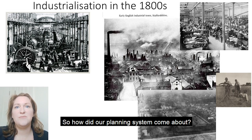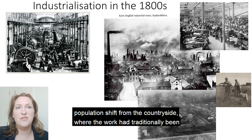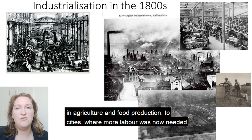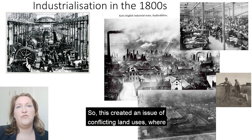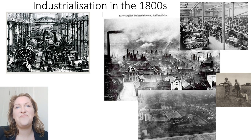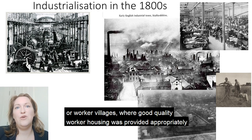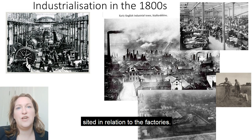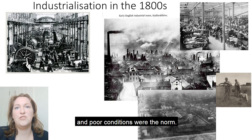So how did our planning system come about? In the 1800s with no planning system in place, industrialisation brought a huge population shift from the countryside, where the work had traditionally been in agriculture and food production, to cities where more labour was now needed in factories mass-producing goods. This created an issue of conflicting land uses where overcrowded slum housing was affected by adjacent fume-spilling factories. By the late 1800s some entrepreneurs like Bourneville and Cadbury had planned towns or worker villages where good quality worker housing was provided, appropriately sited in relation to the factories. But for most individual workers this was unattainable and slum housing and poor conditions were the norm.